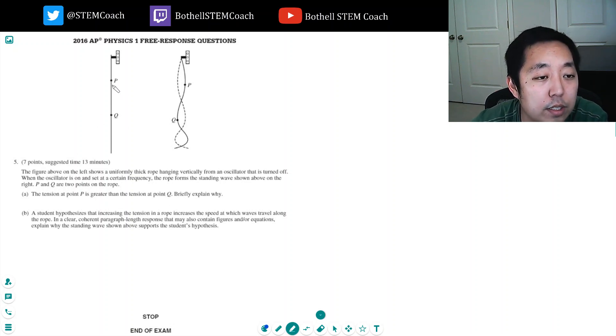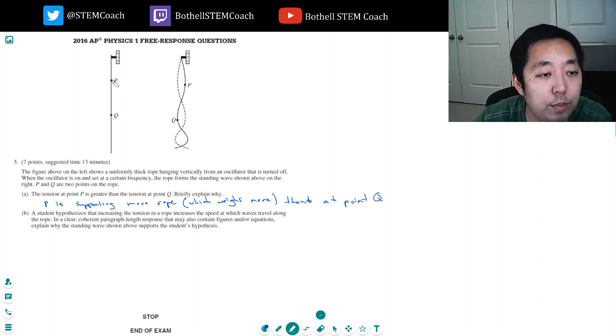So what's happening is the rope has weight, and at P the weight down here is more than the weight down here. So P is supporting more rope, which would weigh more than at point Q. Let's just do a free body diagram at P. What's pulling up? I got tension. What's doing down? Mg. Mg is the weight of all of this below it, right? That's how much is pulling down on it.